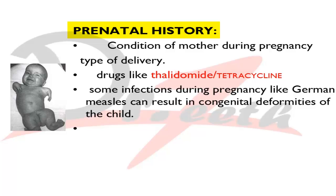You should also ask whether the mother took any drugs during pregnancy. Thalidomide causes hypoplasia of the upper and lower limbs. Tetracycline taken during late pregnancy can cause tetracycline-induced enamel dysplasia or staining in the baby — dysplasia being more significant. Infections during pregnancy like German measles (rubella) can cause congenital deformities, including cleft lip and cleft palate in the growing child.